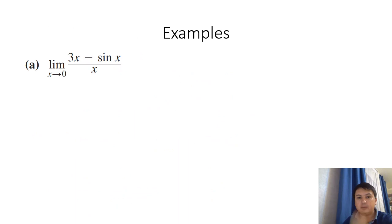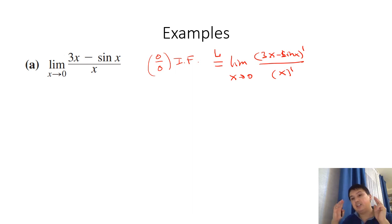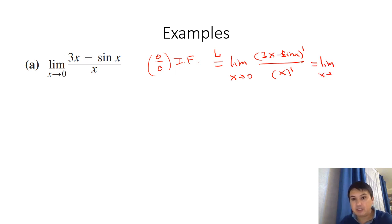Let's do some examples. For (3x − sin x)/x, if you let x = 0, this becomes 0/0, so this is an indeterminate form and we can apply L'Hôpital. Taking the derivative of the numerator and denominator separately — not the quotient rule — we get lim x→0 of (3 − cos x)/1. Letting x go to 0 gives 3 − cos(0) = 3 − 1 = 2. So the limit is 2.